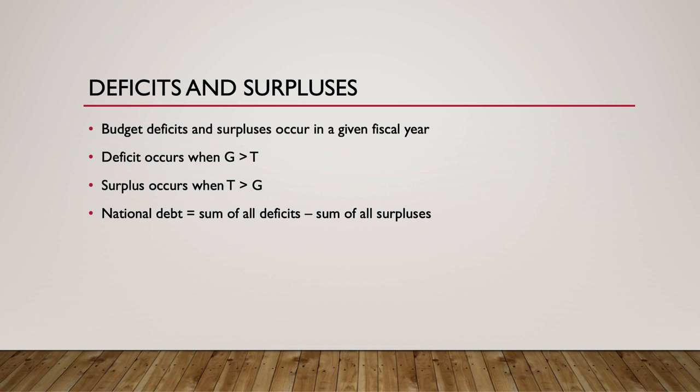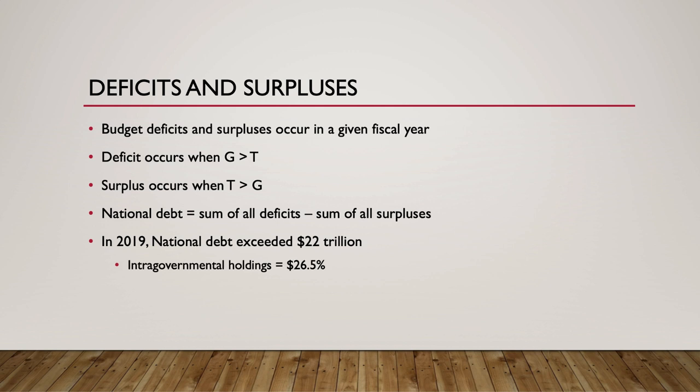Keep in mind that when the government borrows money, it also pays interest, and these interest payments are a part of mandatory spending each year. As of 2019, the U.S. national debt totaled over $22 trillion. A portion of the federal debt is held by government agencies such as the Social Security Administration, the Treasury Department, and the Federal Reserve. As of 2019, intragovernmental holdings account for 26.5% of U.S. national debt.